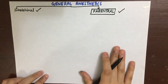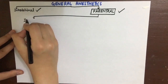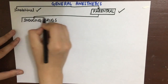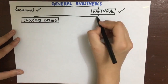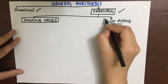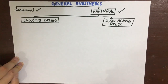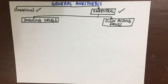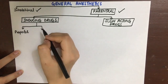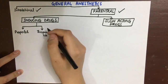Let's look at the parenteral general anesthetics. They are further classified into inducing drugs and slow-acting drugs. The inducing drugs are used for the induction of anesthesia and the slow-acting are for the maintenance. Inducing drugs have a rapid onset and a short duration of action, which is why we need slow-acting drugs for maintenance.